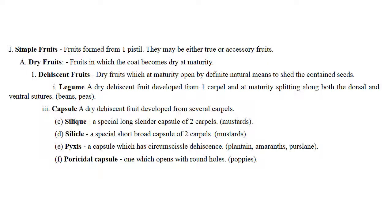Capsule is a dry dehiscent fruit developed from several carpels, like siliqua — which has a long slender capsule of two carpels, like mustard. Silicula has a short broad capsule of two carpels, also like mustard. Pyxis is a capsule with circumscised dehiscence, like plantain, banana, or amaranthus. Poricidal capsule is one which opens in round holes, like opium poppy.